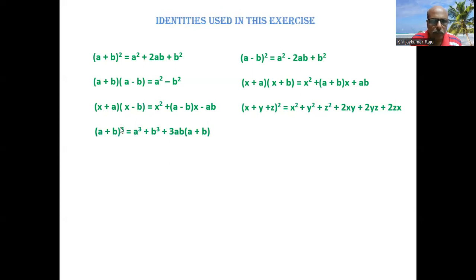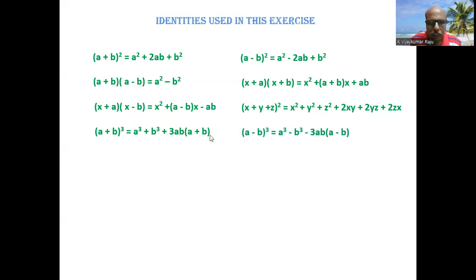(a+b)³ = a³ + b³ + 3ab(a+b). And (a-b)³ = a³ - b³ - 3ab(a-b).